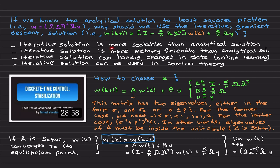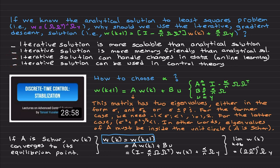First, the iterative solution is more scalable than the analytical solution — if you have large datasets used in machine learning, you should prefer the iterative solution. Second, the iterative solution is more memory-friendly than the analytical solution because you are not computing a matrix inverse or similar operations. These two are the generic items most people mention in textbooks and videos.